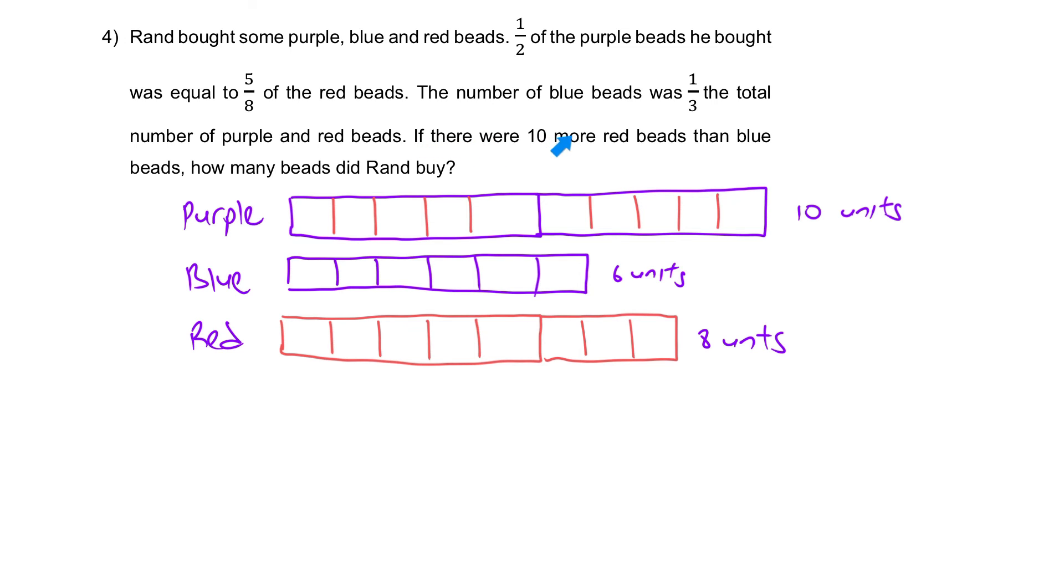If there were 10 more red beads than blue beads, how many beads did Ren buy? So what can we say about here? The space here, it must be 10. The difference between red and blue is 10. Hence our first step. Two units is equal to 10. One unit will be 10 divided by 2, which will give us 5. So every single unit here is 5.